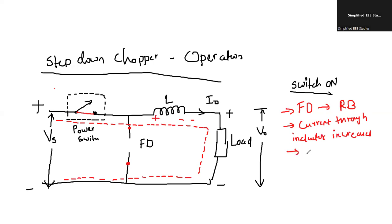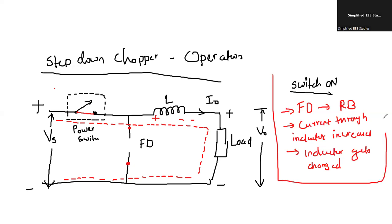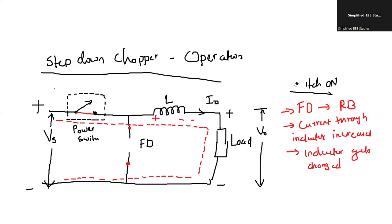Inductor gets charged. This is the specialty during turn-on when the switch is ON. During the first condition, switch is ON. Now, during the second condition, whenever the switch is OFF — let me explain what will happen when the switch is OFF.